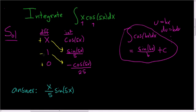And then here we get another positive because negative and negative is positive. So plus 1 over 25, cosine 5x, and then plus our constant c.